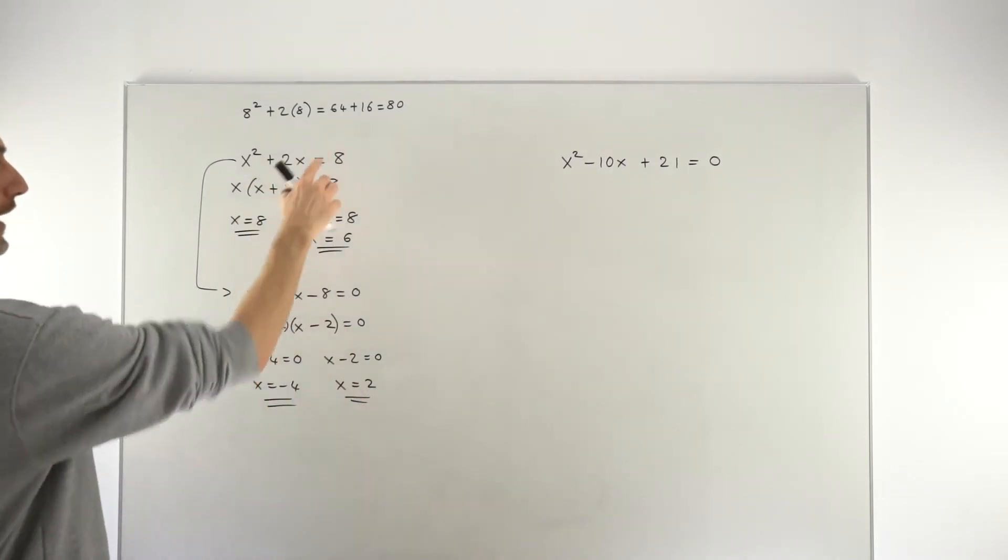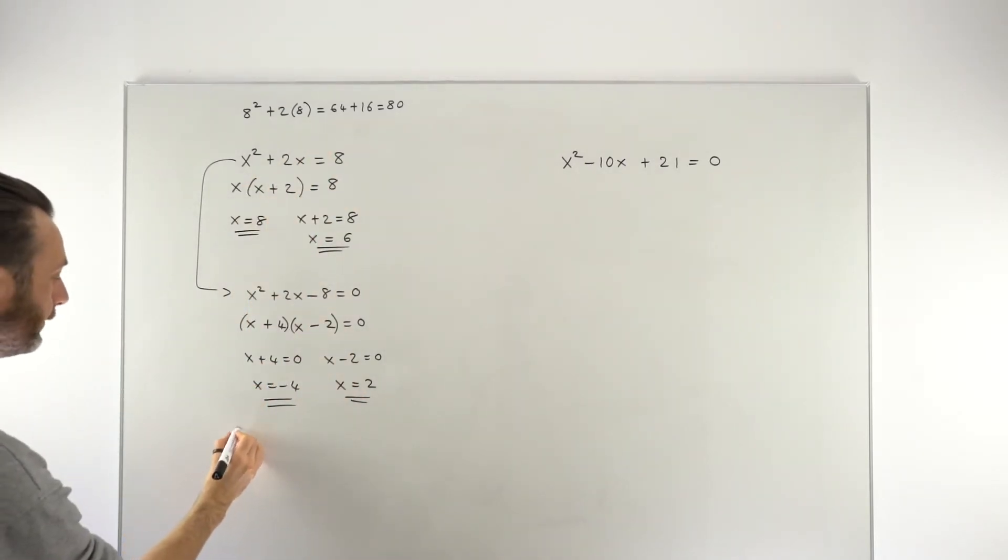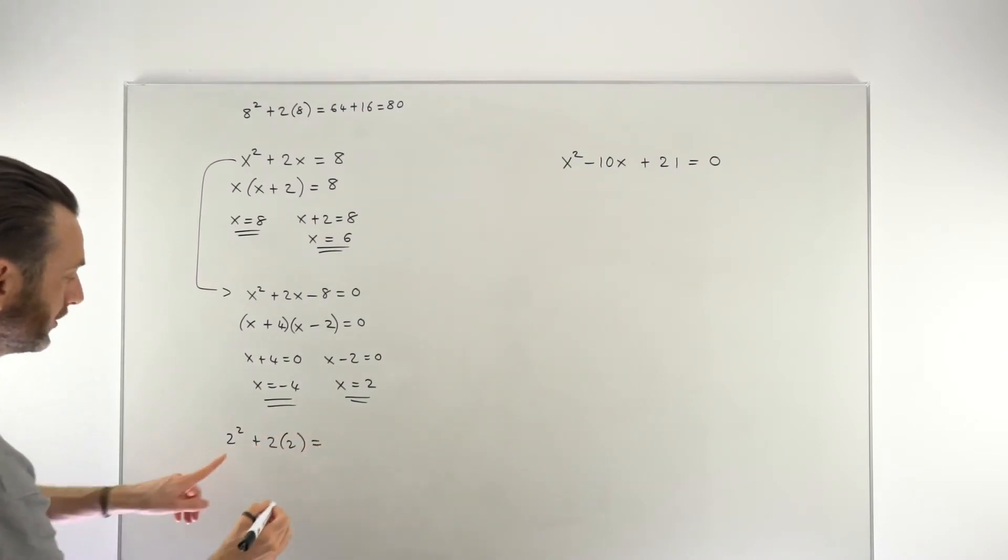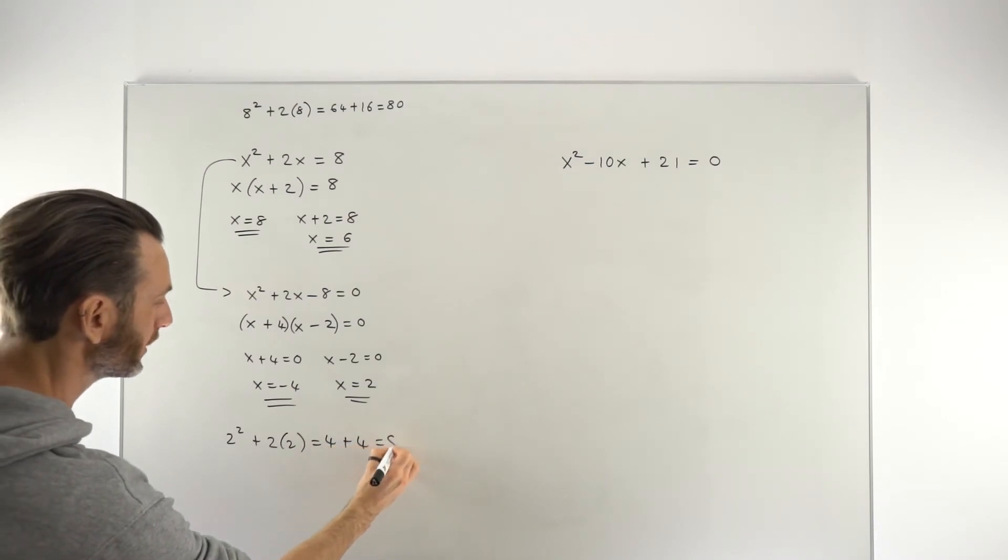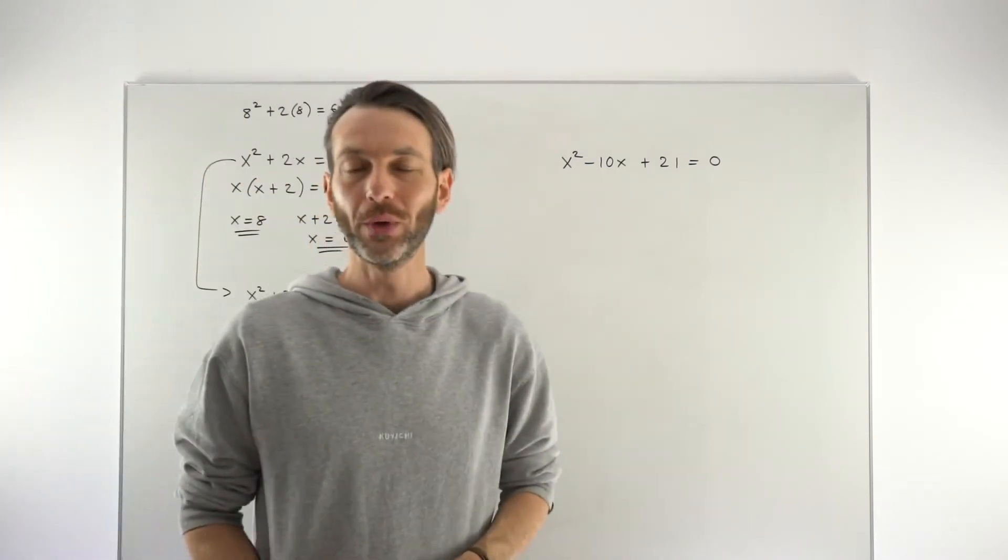So if I take the 2 for example and put it back into here we're going to get 2 squared plus 2 times 2 and that should come out to be 8. 2 squared is 4, 2 times 2 is 4 so 4 plus 4 does give us 8 and that does satisfy the original equation.